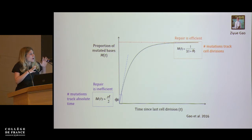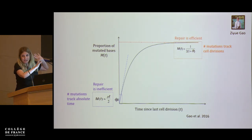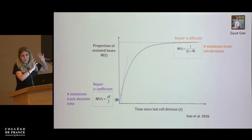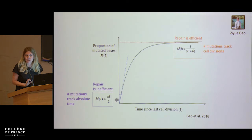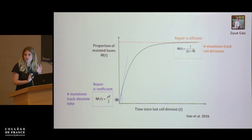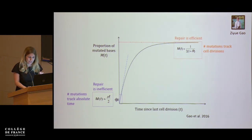So in that limiting behavior, even though mutations are non-replicative in origin, they end up tracking cell divisions. In practice we probably live in neither of these two limits, but the model conveys two important points: first, there are conditions under which damage-induced mutations nonetheless track cell divisions; second, repair efficiency relative to the length of the cell cycle is a key parameter in determining what we might expect.